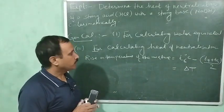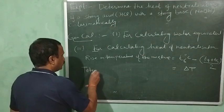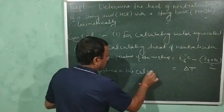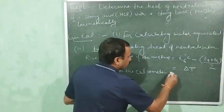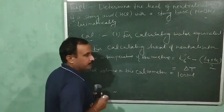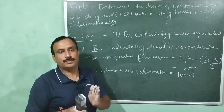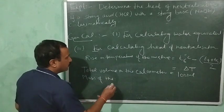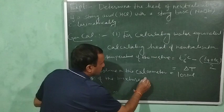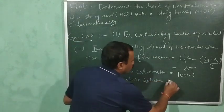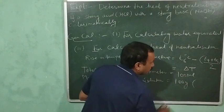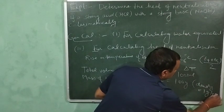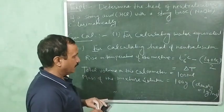The total volume in the calorimeter is 100 ml — that is 50 ml NaOH plus 50 ml HCl. The mass of the mixture solution is 100 grams, because we take the density of the solution as 1 gram per ml.